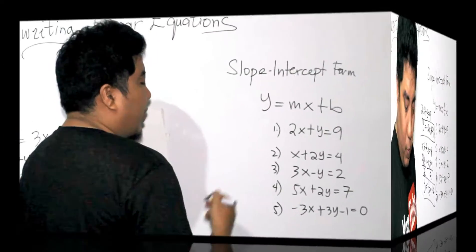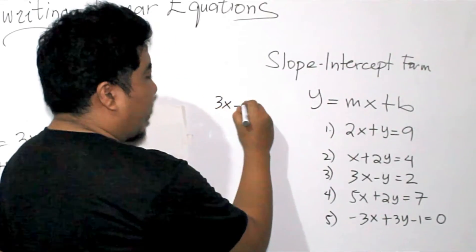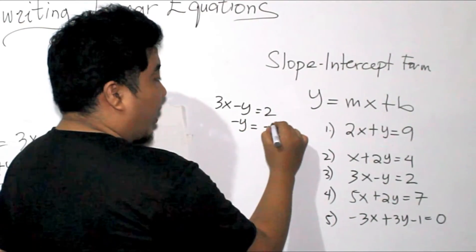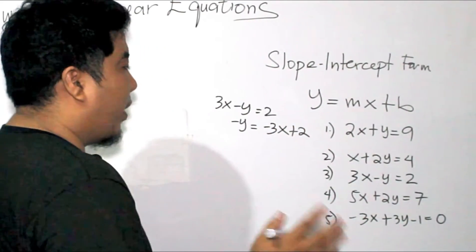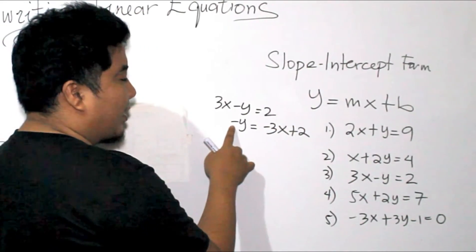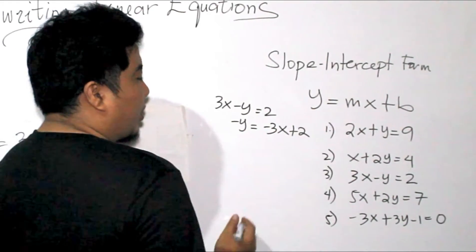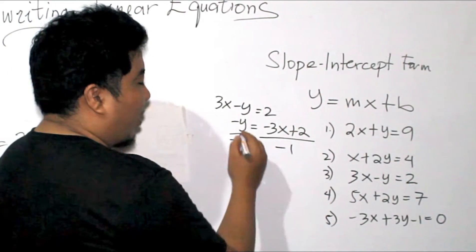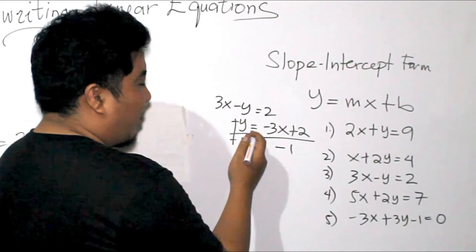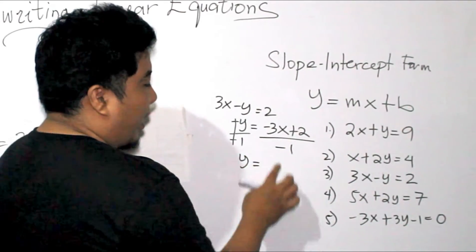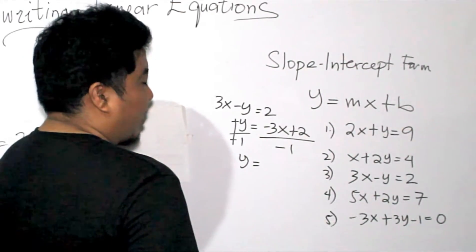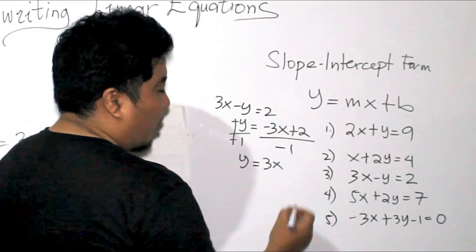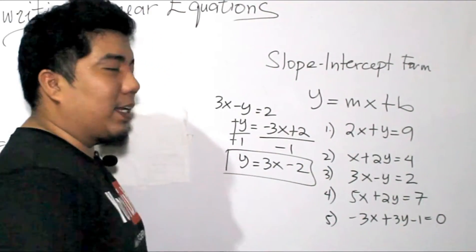For the third example, we have 3X minus Y is equal to 2. We transpose 3X, giving us negative Y is equal to negative 3X plus 2. However, our Y has a negative sign, so we divide by negative 1. Y divided by 1 is Y; negative divided by negative is positive, so 3X stays positive 3X; and 2 divided by negative 1 is negative 2. So the final answer is Y is equal to 3X minus 2.